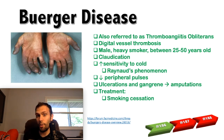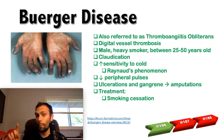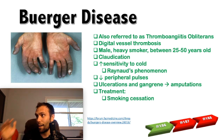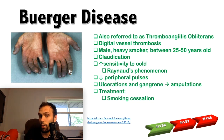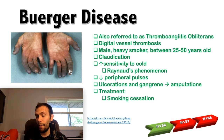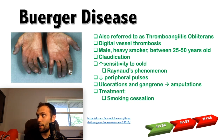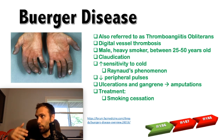Buerger's disease, or thromboangitis obliterans, results primarily in digital vessel thrombosis, causing ischemia in the fingers. This is similar to what we see when excessive vasopressors cause prolonged vasoconstriction in digital extremities, sometimes leading to gangrene and amputation. In Buerger's disease, inflammation causes thrombosis in those vessels rather than vasoconstriction.